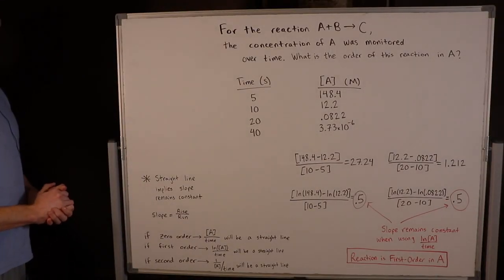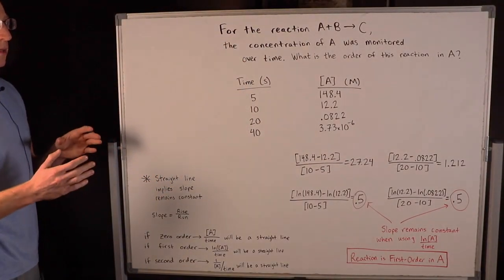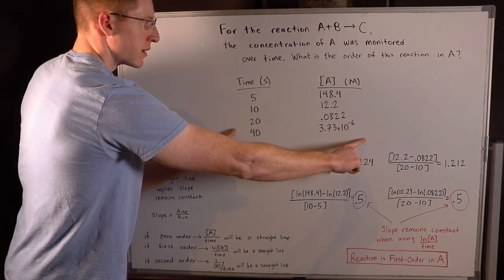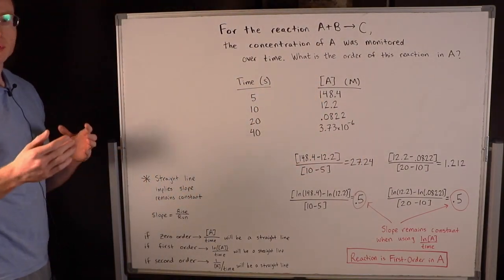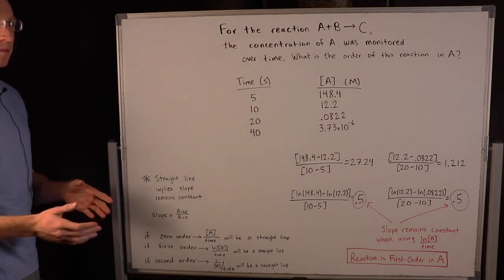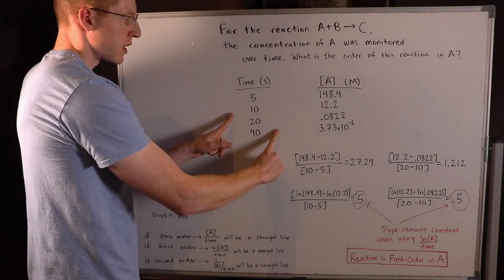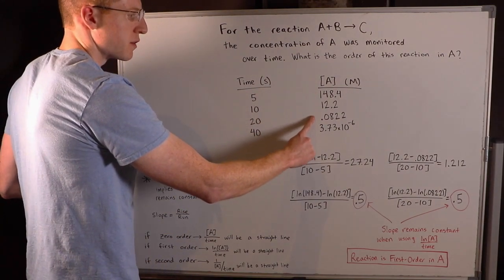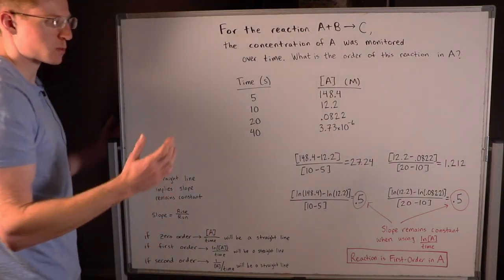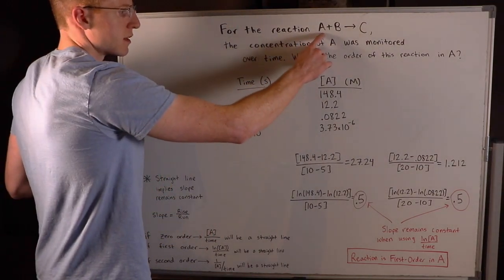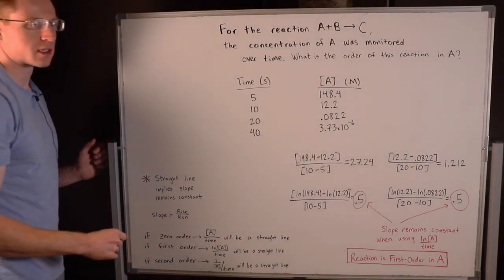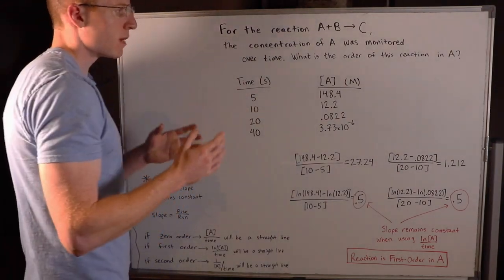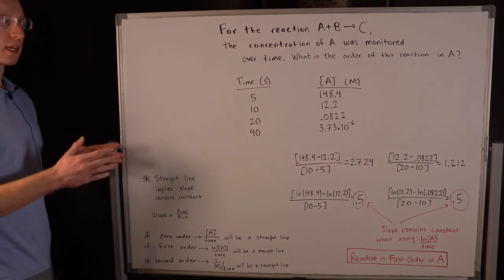Here's the last problem I'd like to do. For the reaction A + B → C, the concentration of A was monitored over time. I have that data right here. They want to know what is the order of this reaction in terms of A. This data shows us that at 5 seconds, 10 seconds, 20 seconds, and 40 seconds, what the concentration of A was in molarity. Of course A is a reactant and its concentration is going to decrease over time because it's being used up to make product.